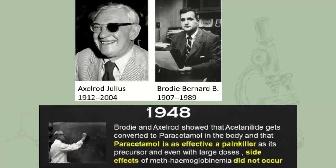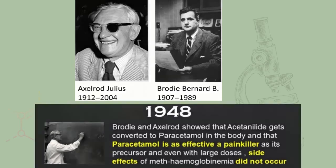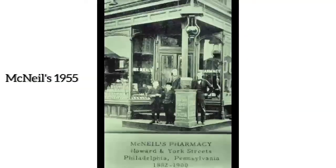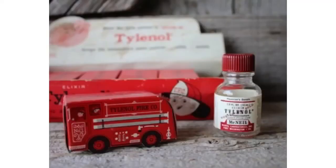It was later discovered that prolonged use of phenacetin leads to analgesic nephropathy. Fortunately, this error was corrected later in 1948, when Bernard Brodie and Julius Axelrod revealed that acetaminophen was the main active metabolite formed from acetanilide and phenacetin. They demonstrated that this active compound was responsible for the analgesic action, and that methemoglobin was caused by another chemical compound.